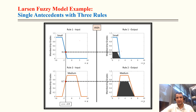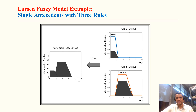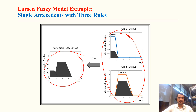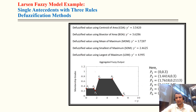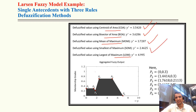For rule one (Larsen model), we scale down the output by 0.3. For rule two, we scale down by 0.7. We then aggregate these two fuzzy outputs into a single fuzzy output. Applying defuzzification: center of area gives 3.5, bisector of area gives 3.6, mean of maxima gives 3.7, smallest of maximum gives 2.4, and largest of maximum gives a higher value.